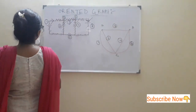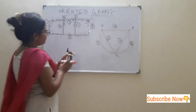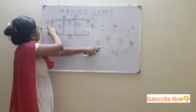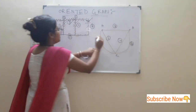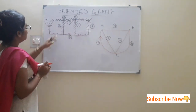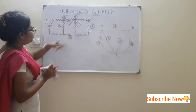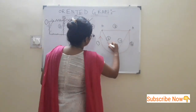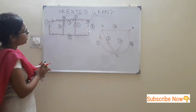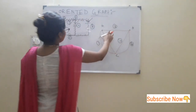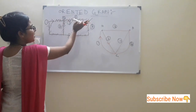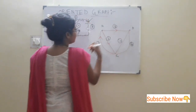Now we have to give the orientation. For branch 1, the orientation is like this. For branch 2, the orientation is like this — a downwards orientation. For branch 3, the orientation is going to the right side, like this.